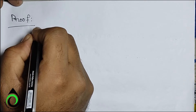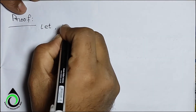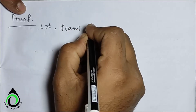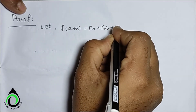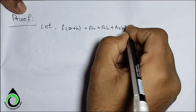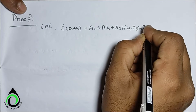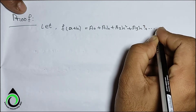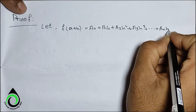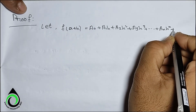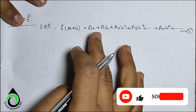Proof: Let f(a+h) = a₀ + a₁h + a₂h² + a₃h³ + ... + aₙhⁿ + ... — equation (1).